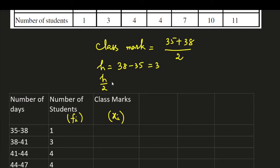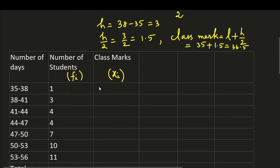Half of class size is 3 by 2, that is 1.5. Then class mark is equal to lower boundary plus half of class size. Here we get lower boundary is 35 plus 1.5. This is 36.5. In this way we can write class marks. For the first one, it is 36.5.